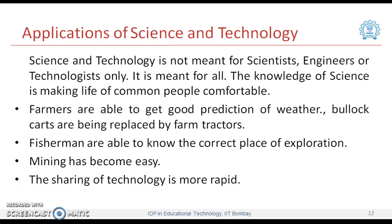Let us look at the applications of science and technology. Science and technology is not meant for scientists, engineers, or technologists only — it is meant for all. The knowledge of science is making the life of common people comfortable. For example, farmers are able to get good predictions of weather, bullock carts are being replaced by farm tractors, fishermen are able to know the correct place of exploration, mining has become easy, and the sharing of technology is more rapid.